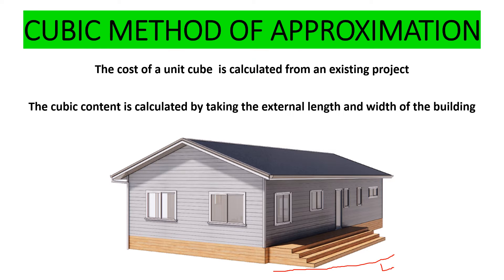We need to get the external length of the building and then we also take the external width of that building so we can get the cubic content. Once we have the external length and external width, we also need to get the height, which is measured from the top of the foundation concrete upward. For the flat roof and the pitched roof, we measure the height differently.